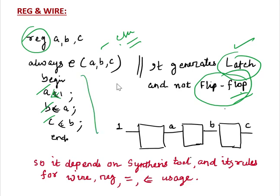This is the hardware it generates from that piece of code. So it depends on the synthesis tool and its rules for Wire and Reg. The rules to remember: use non-blocking assignment and passage of clock for sequential logic. Blocking assignment can generate sequential logic and can also generate combinational logic, as explained in many videos.